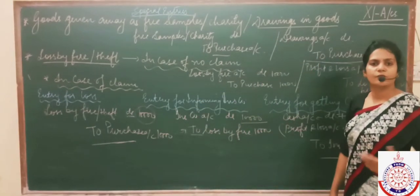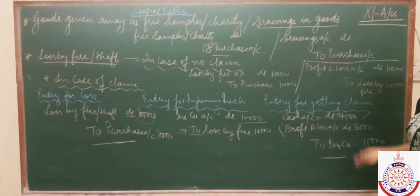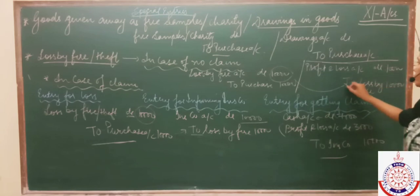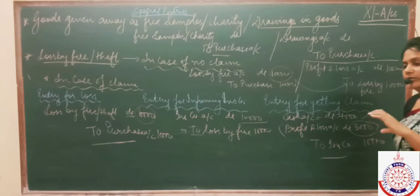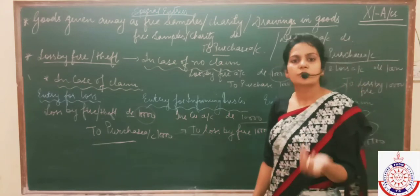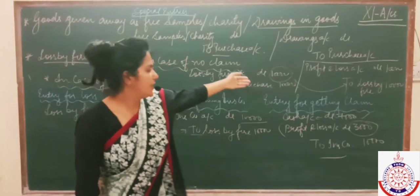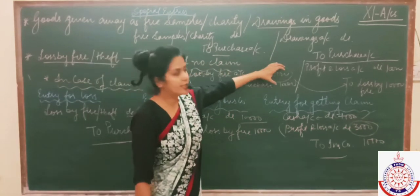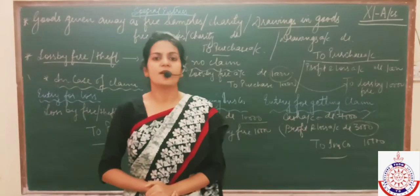The second entry is not passed because the goods were not insured. The third entry is also not passed because we are not receiving any cash. The entire loss of 10,000 is transferred to profit and loss account. In the insured case, only 3,000 was transferred because 7,000 was recovered from the insurance company. But in the uninsured case, the entire loss of 10,000 is transferred to profit and loss account.